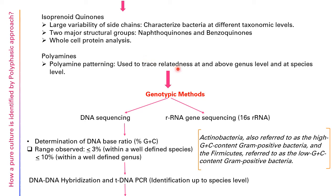After phenotypic methods, we proceed to genotypic methods — gene-related techniques used for identification. First comes DNA sequencing, then 16S rRNA gene sequencing. For determination of DNA base ratio, the percent GC content is studied. If the difference is below 3%, it is within a well-defined species; if it is less than 10%, it is within a well-defined genus.